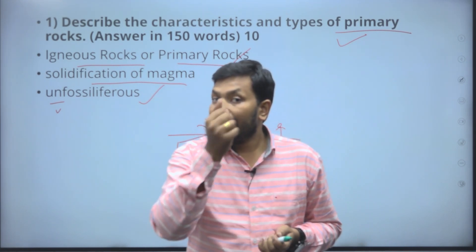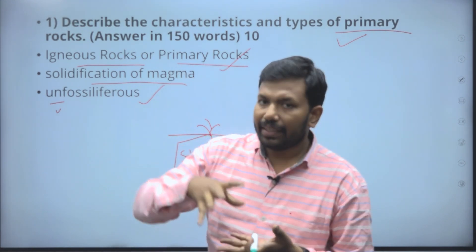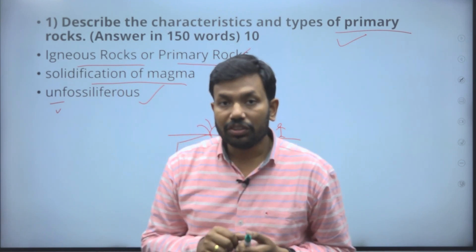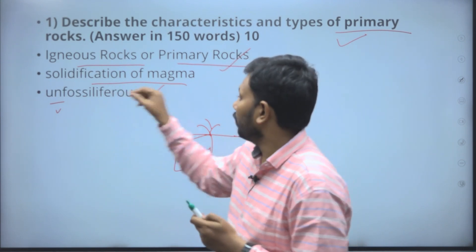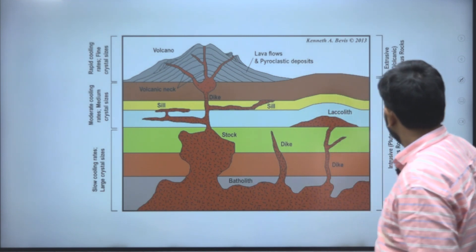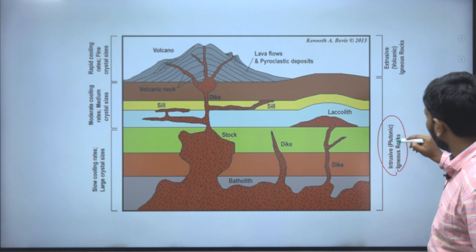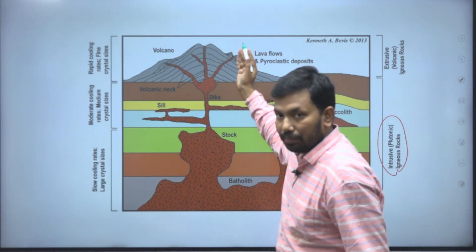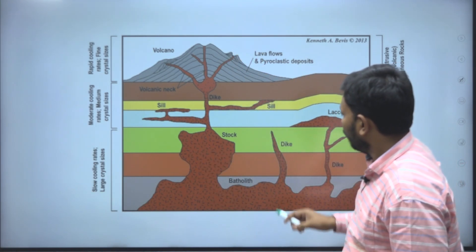We don't find fossils in igneous rocks. If it is a sedimentary rock, yes, we will have fossils. If a sedimentary rock converts with high pressure and temperature it becomes metamorphic, but in igneous rocks we won't find fossils because magma or lava converts into solid rock. I think you can see here: igneous rocks are classified into intrusive plutonic rocks and extrusive rocks — rocks which are formed after magma comes out.